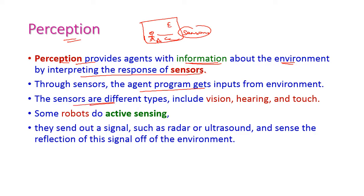The sensors are different types. They may include vision sensors, hearing sensors, and touch sensors. Some special sensors are also there that will be used in robots, and they send out a signal, such as radar or ultrasound signals, and sense the reflection of these signals off the environment.